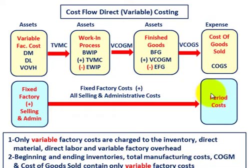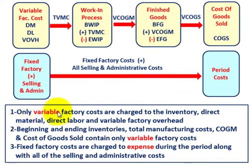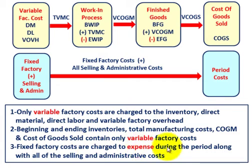To summarize the cost flow for direct variable costing: first, only the variable factory costs are charged to inventory — that would be direct materials, direct labor, and variable factory overhead. Second, beginning and ending inventories, total manufacturing cost, cost of goods manufactured, and cost of goods sold contain only the variable factory costs. Third, fixed factory costs are charged to expense during the period, along with all selling and administrative costs.